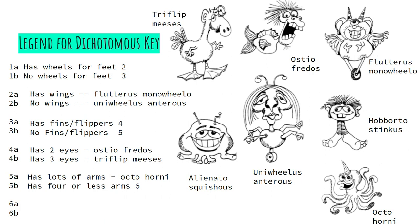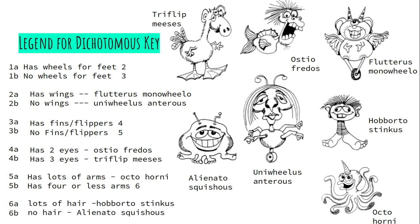My last step is question six: has four arms or less. What is a distinguishing feature for the final two? Haborto Stinkus has hair and Alienato Squishus doesn't. So if it has lots of hair, it's Haborto Stinkus, and if it has no hair, it's Alienato Squishus. And that is my completed dichotomous key.